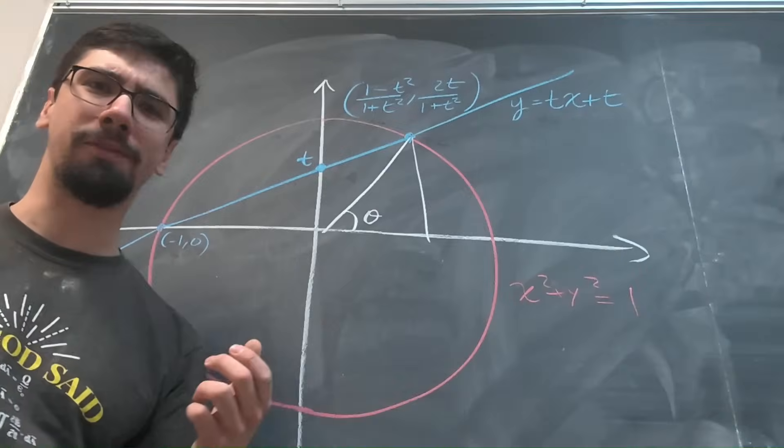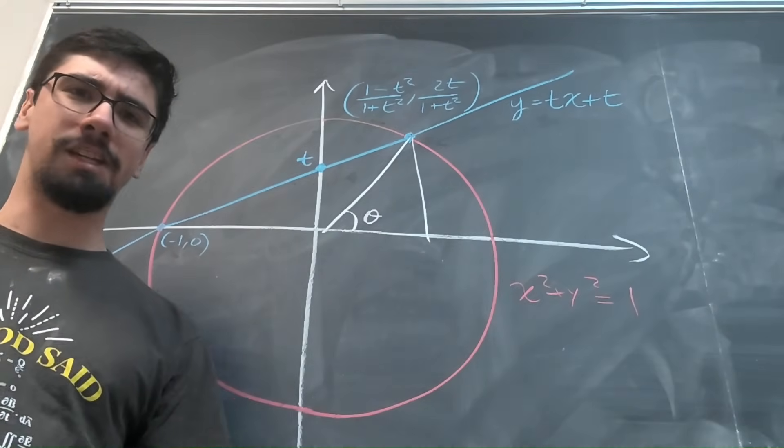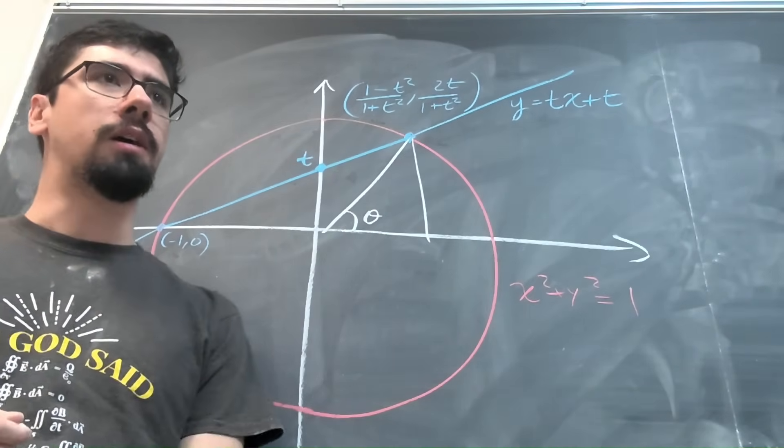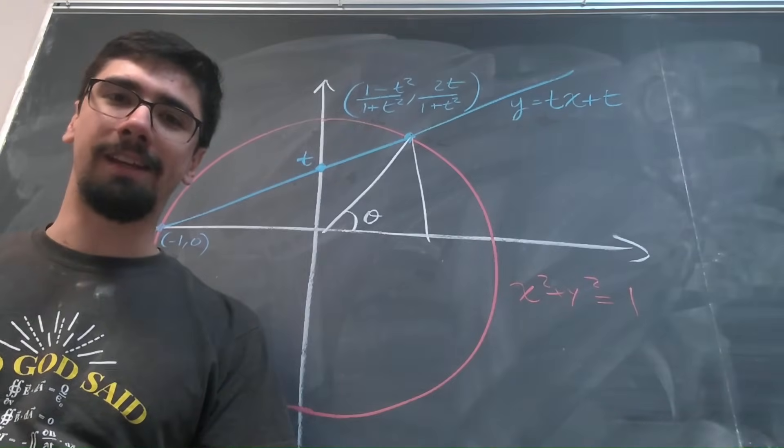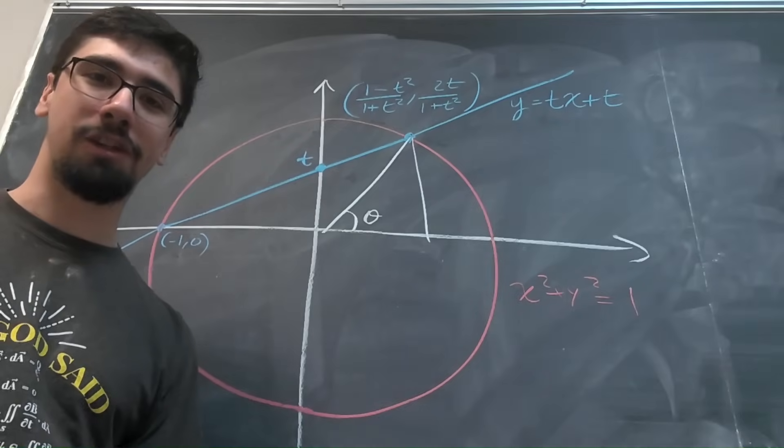So that's where the sine and cosine come from. But what about the tangent of x over 2? Well, one way you can do that is just by using trig identities, but I think it's way more insightful to look at this geometric picture here.